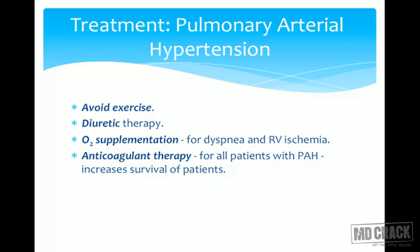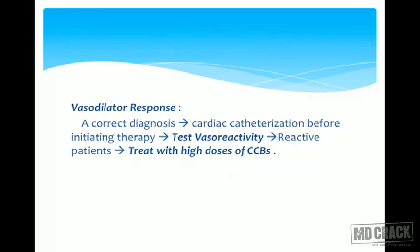Oxygen supplementation decreases dyspnea and right ventricular ischemia. Anticoagulant therapy should be started for all severe idiopathic pulmonary arterial hypertension cases, and the drug of choice is warfarin. Vasodilator response testing should also be performed in IPAH patients.